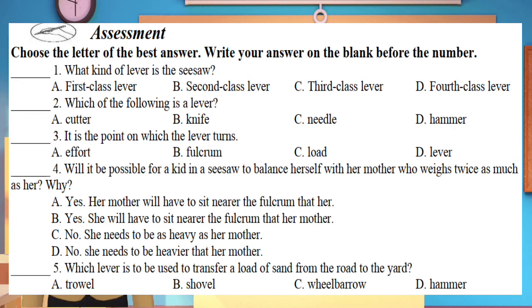Number four: will it be possible for a kid in a seesaw to balance herself with her mother who weighs twice as much as her? Why? A. Yes, her mother will have to sit near the fulcrum than her. B. Yes, she will have to sit near the fulcrum than her mother. C. No, she needs to be as heavy as her mother. Or D. No, she needs to be heavier than her mother.